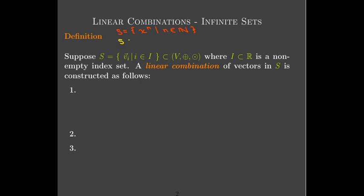Another example: exponential functions, where we have all possible coefficients k on the exponent times x, where k is a real number. Now remember, the first set — the powers of x where the power is a natural number — is a countable set. So we actually have an option of rewriting that as a sequence: 1, x, x squared, x cubed, and so on. But our second set, where the index set is the real numbers, is uncountable. So this is the only way we can write it using set builder notation.